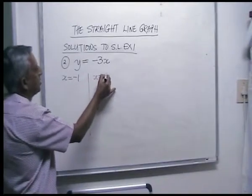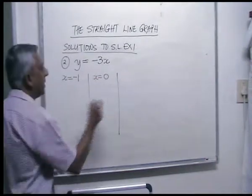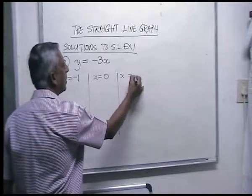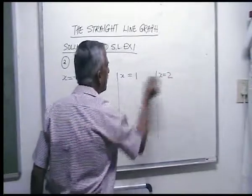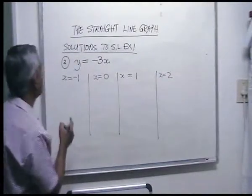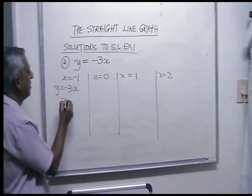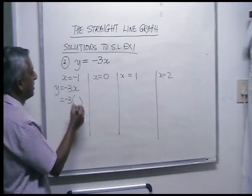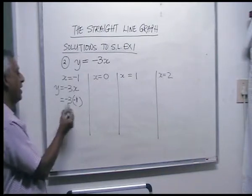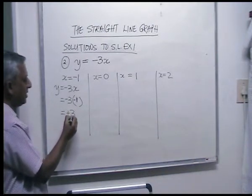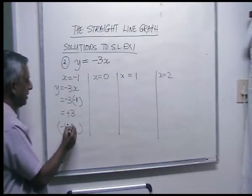For number two, let's say you chose x is minus one, x is zero, x is one. For y is equal to minus three x with x is minus one: minus times minus gives you plus, so three ones three. Your first ordered pair is minus one, three.